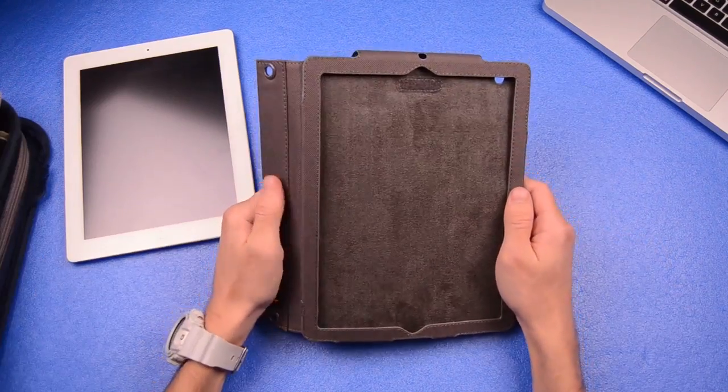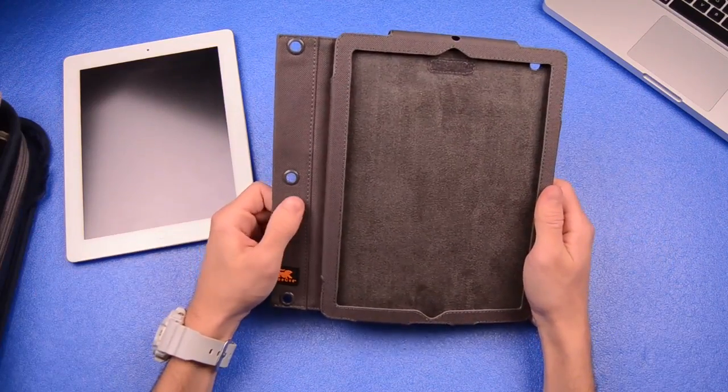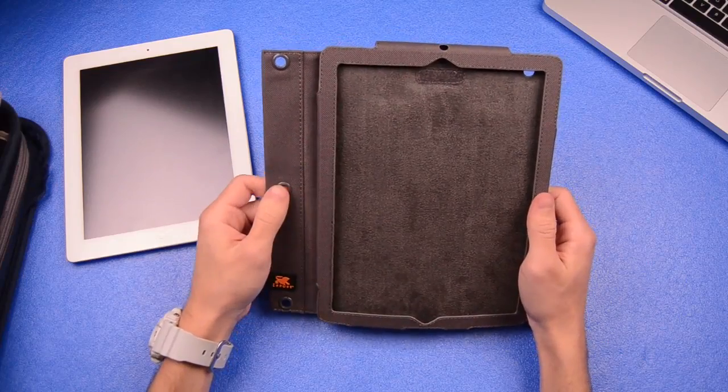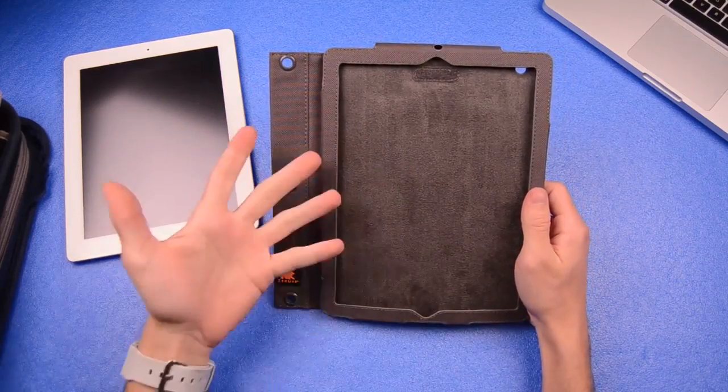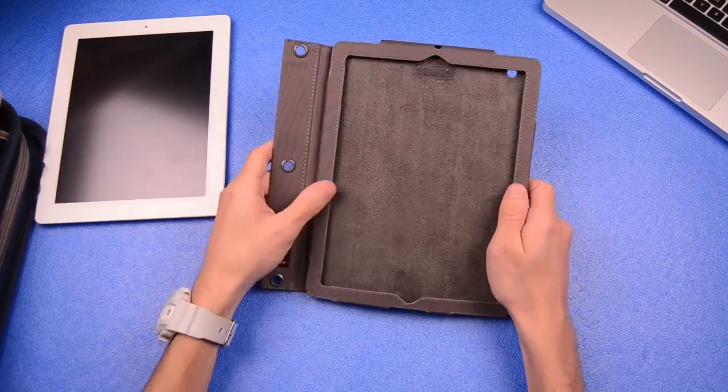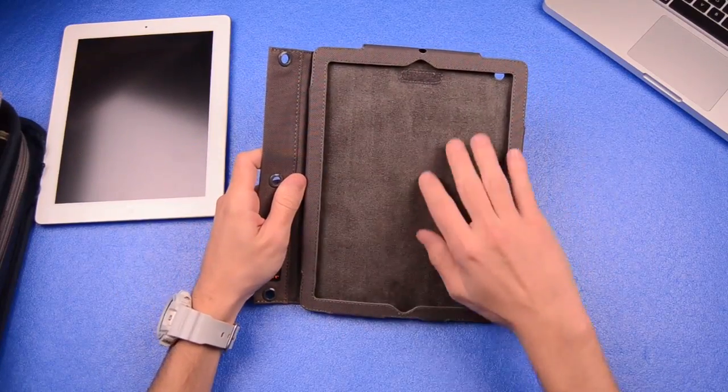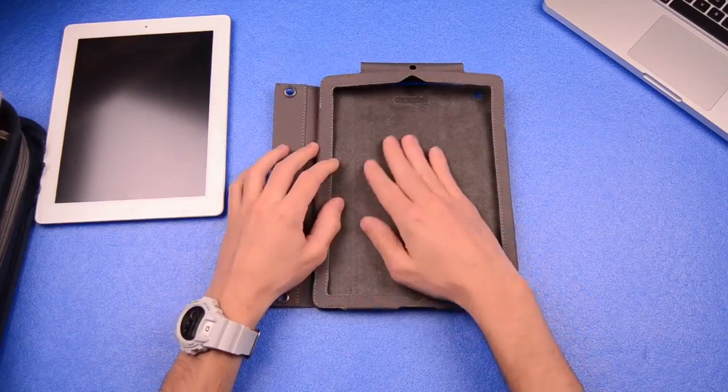The case itself is made out of a polyester, it's a very smooth polyester, nothing that you really have to worry about scratching your iPad at all which is awesome. You guys see that it has gray right here, you can also get it in black if you check out their website. On the inside you guys see here it's a different material, it's much softer on here.